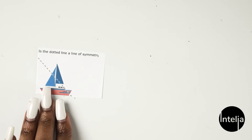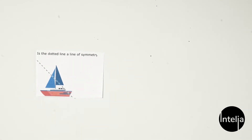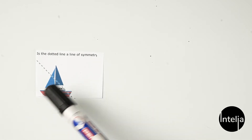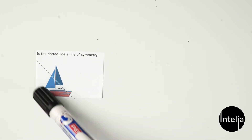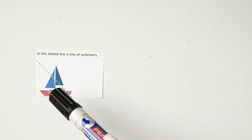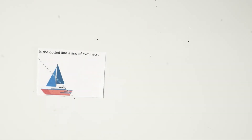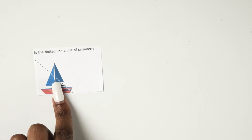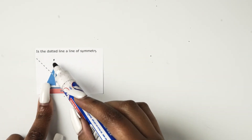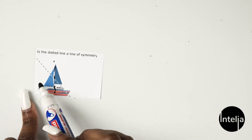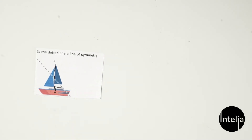Let's move on to the ship. We can already tell that this isn't a line of symmetry because you have a big portion of the boat on this side and then you don't have that on this side. We can't even draw a line of symmetry here because even if I had to attempt to draw one, the left and the right wouldn't be identical.